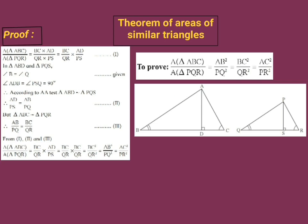We know the ratio of the areas of two triangles is equal to the ratio of the products of their bases and corresponding heights. For triangle ABC, if we consider BC as the base, then its height will be AD. For triangle PQR, if we consider QR as the base, then the height will be PS. Hence, area of triangle ABC upon area of triangle PQR equals BC × AD upon QR × PS, which equals BC upon QR × AD upon PS. This is statement number 1.